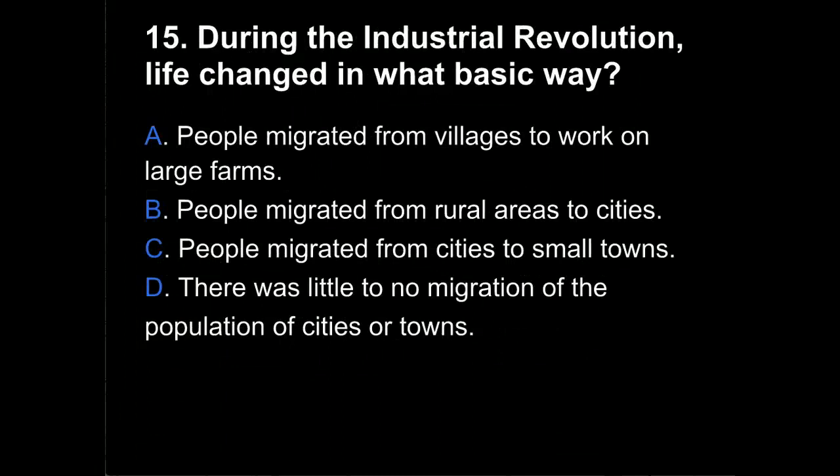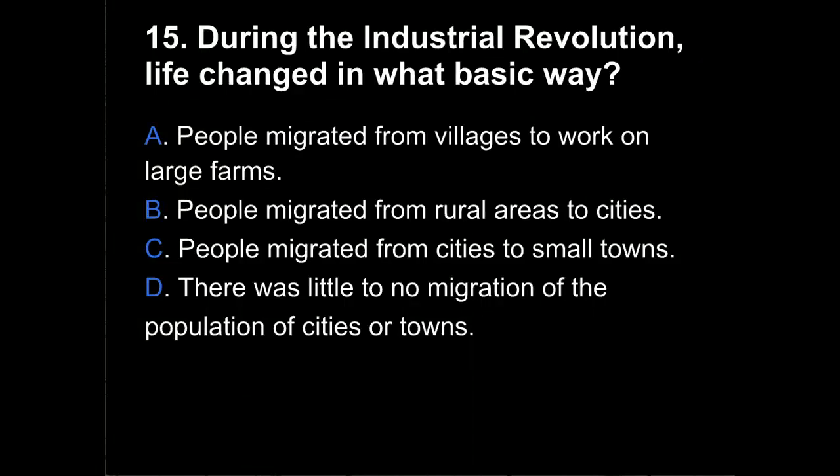Question 15. During the Industrial Revolution, life changed in what basic way? A, people migrated from villages to work on large farms? B, people migrated from rural areas to cities? C, people migrated from cities to small towns? Or D, there was little to no migration of the population of cities or towns?